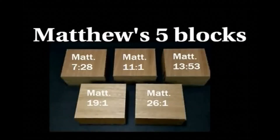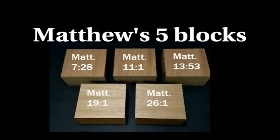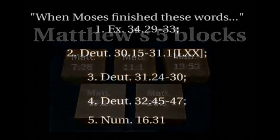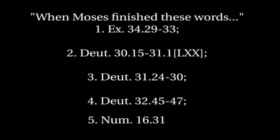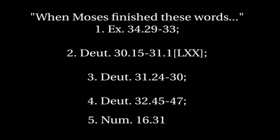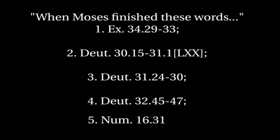What we're doing here is the so-called five blocks of teaching from Jesus in the Gospel of Matthew, which contrast Jesus with Moses. I found a contrast in Exodus 34, in Deuteronomy chapters 30 to 32, and Numbers 16 — where Moses finished those things after he gave the law, or gave parts of the law, or talked about the covenant, and then it says Moses finished teaching the people.